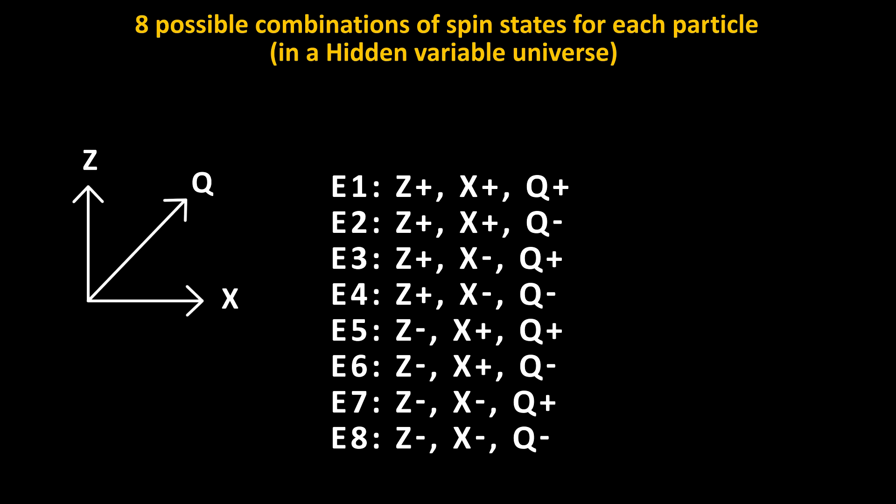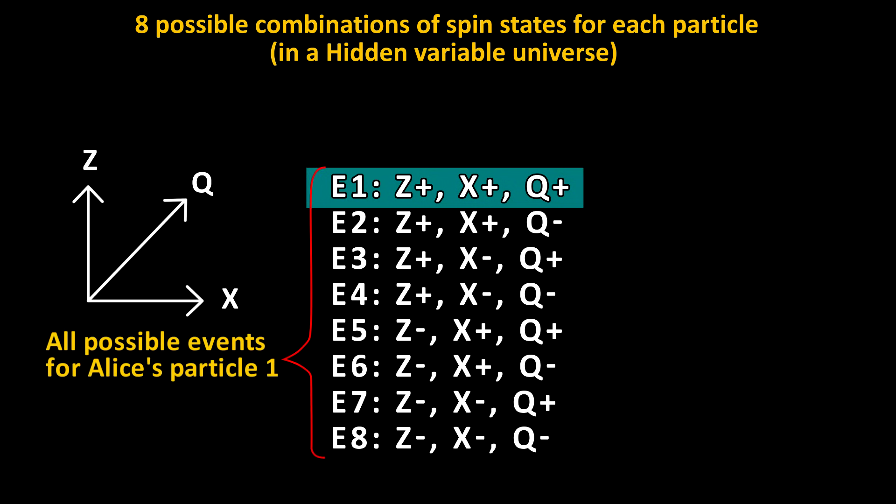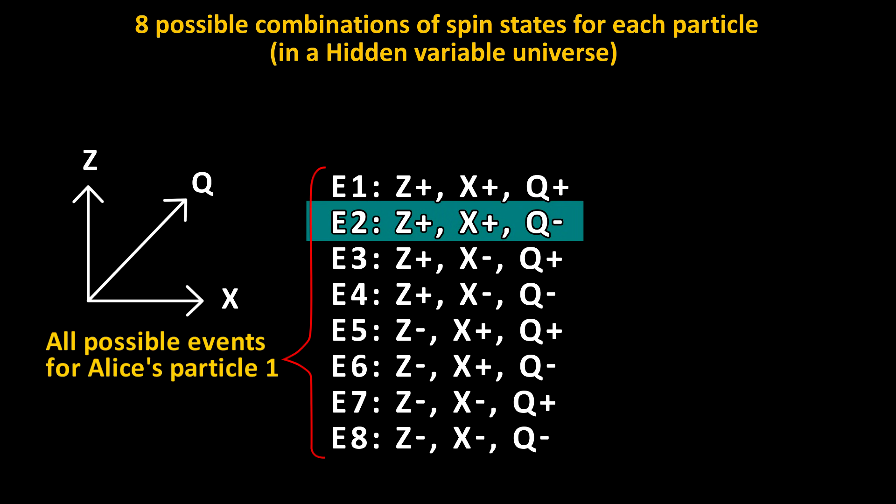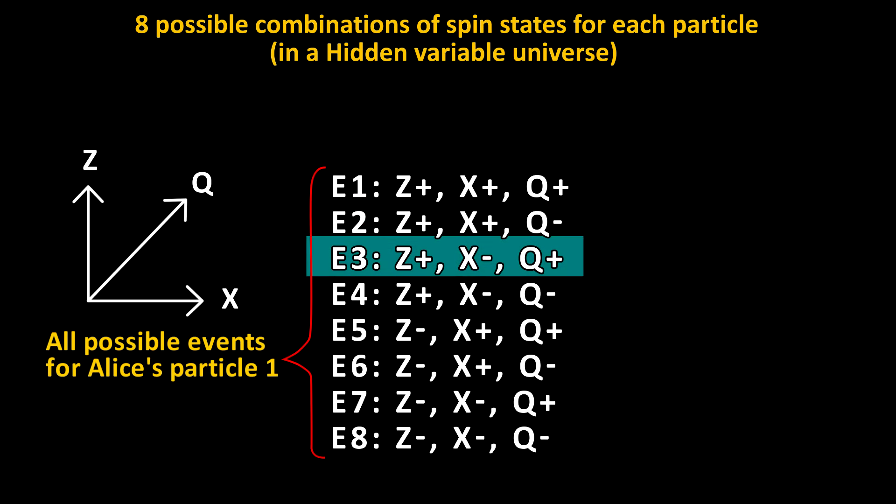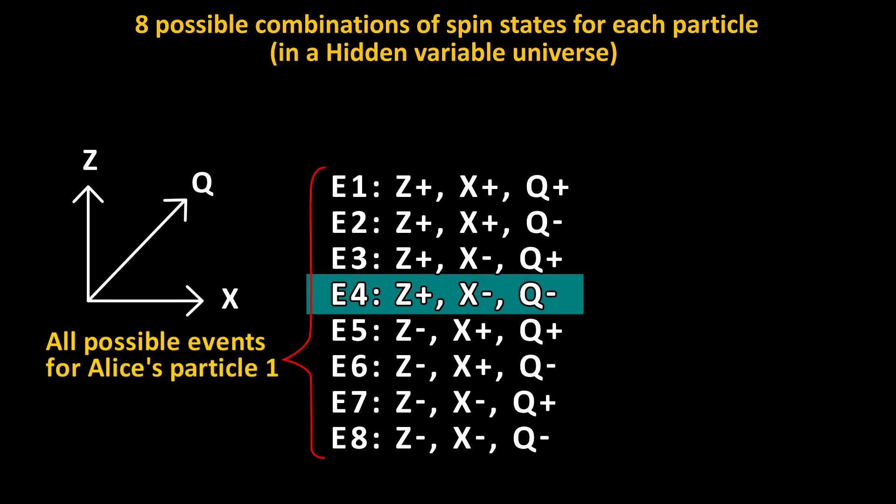And there are only eight combinations or possibilities of spins that each particle could have. So for Alice and Bob, these eight combinations will be the following. Event one could be where the spin in the z direction is positive, the spin in the x direction is positive, and the spin in the q direction is positive. E2 is when z is positive, x is positive, and q is negative. E3 is when z is positive, x is negative, and q is positive. E4 is when z is positive, x is negative, and q is negative.